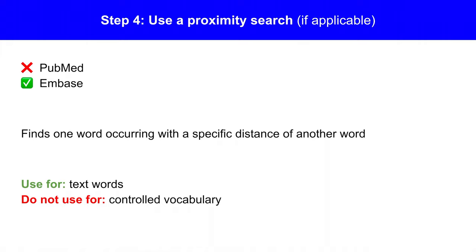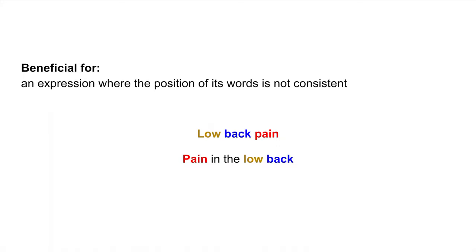Step 4: If applicable, use a proximity search. Proximity searching is not available in PubMed, but you can use it in Embase. This search finds one word occurring within a specific distance of another word. Use proximity searches for text words and not for controlled vocabulary terms. Proximity searching is beneficial for an expression where the position of its words is not consistent. For example, 'low back pain' could also be expressed as 'pain in the low back.' Both expressions have low, back, and pain in common, but the word order and adjacency are different. Through a proximity search, we could capture both of these expressions.